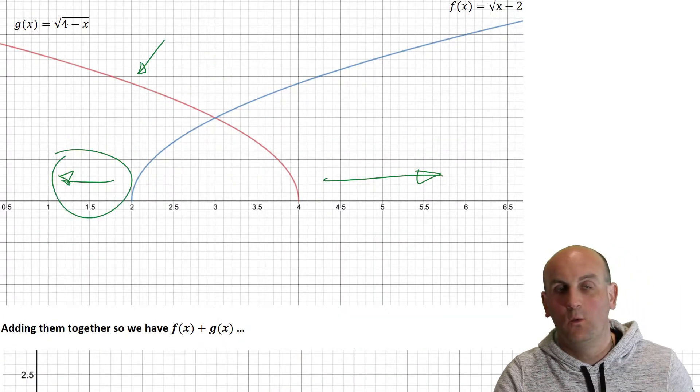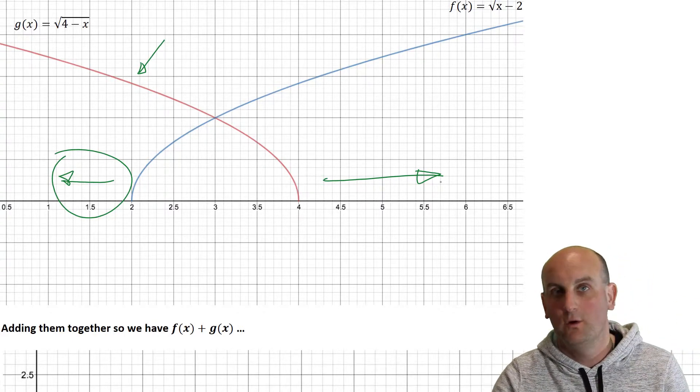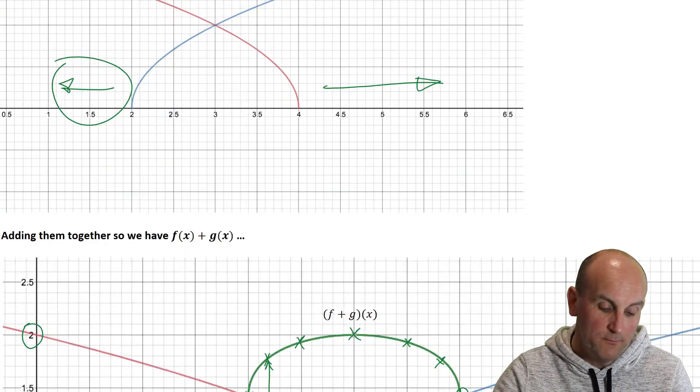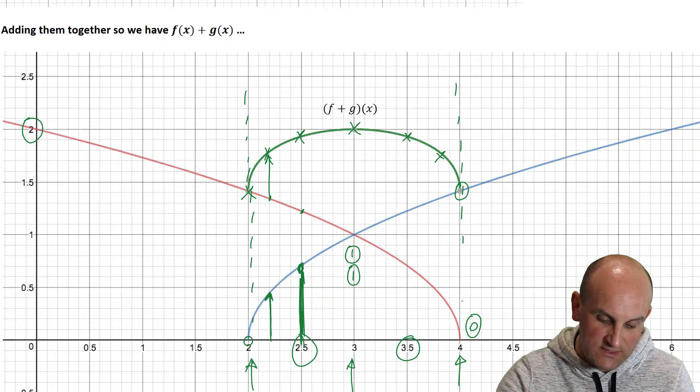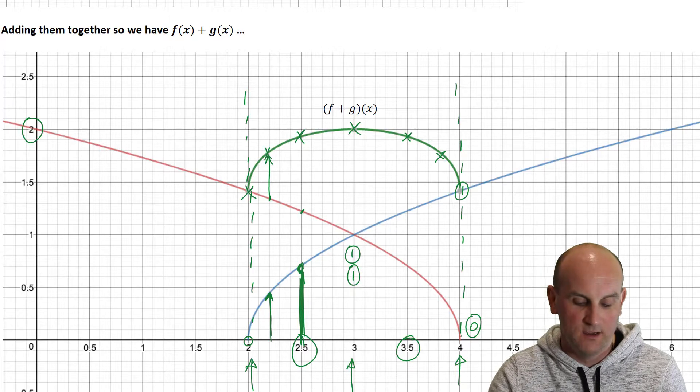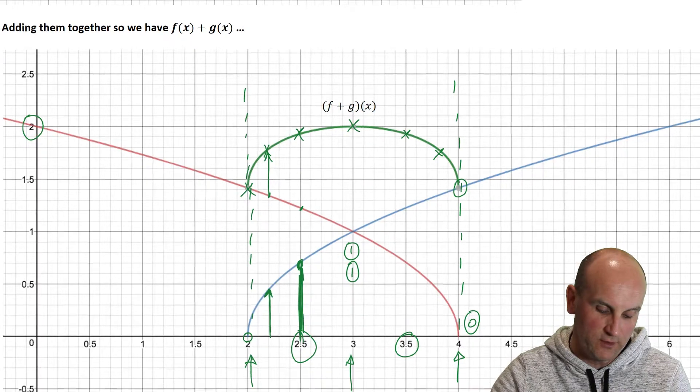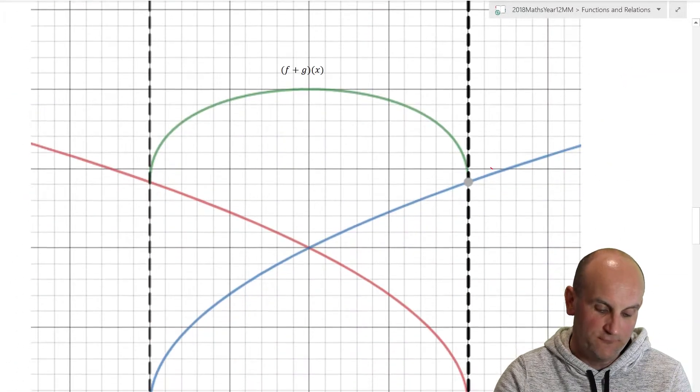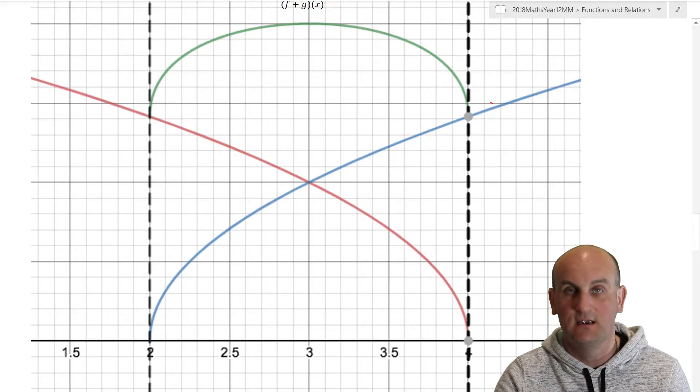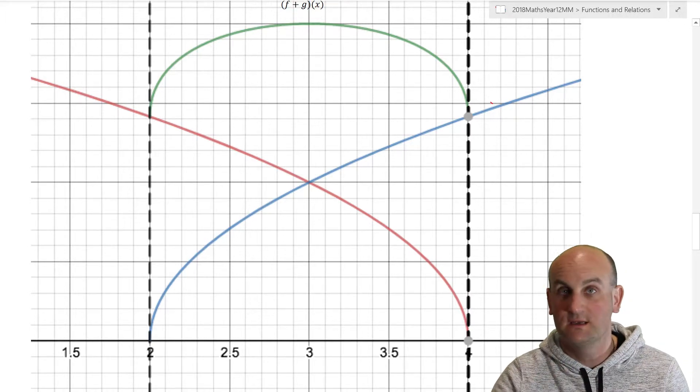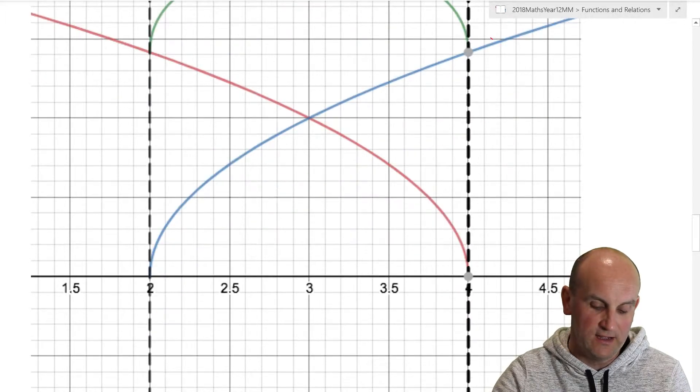Now, going back to what I said a moment ago, what did we notice about the blue curve? It was not defined on the left-hand side. And what did I notice about my red curve? It wasn't defined on my right-hand side. And so we noticed that actually my function, my addition, when I've taken this f plus g of x, only exists in that very small part where the both graphs overlap. Those dotted black lines show that this thing only exists between x equals 2 and x equals 4.